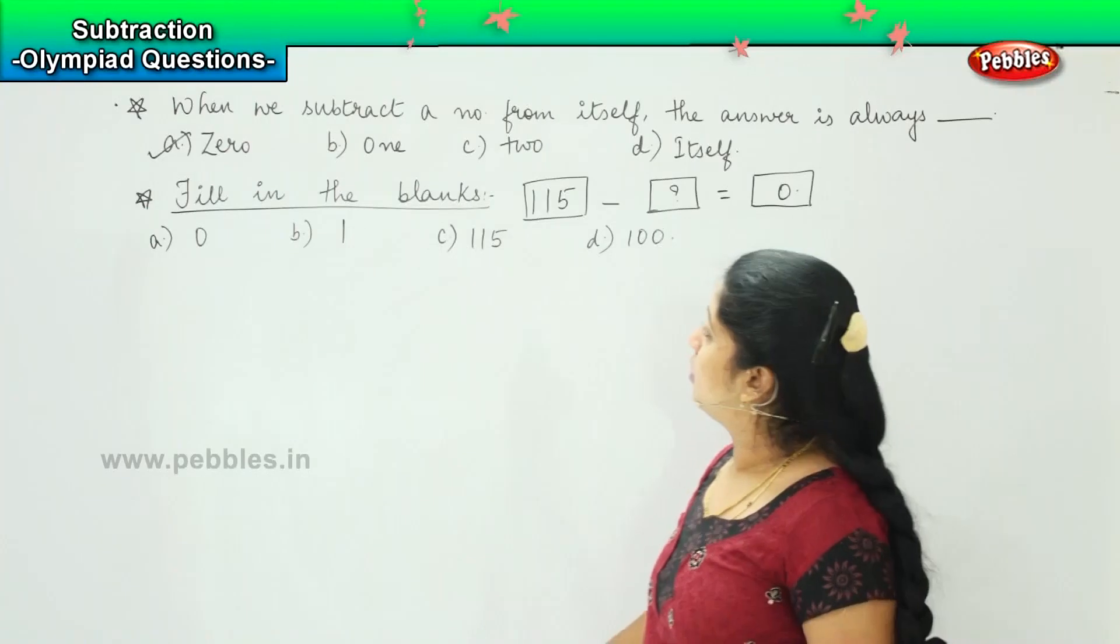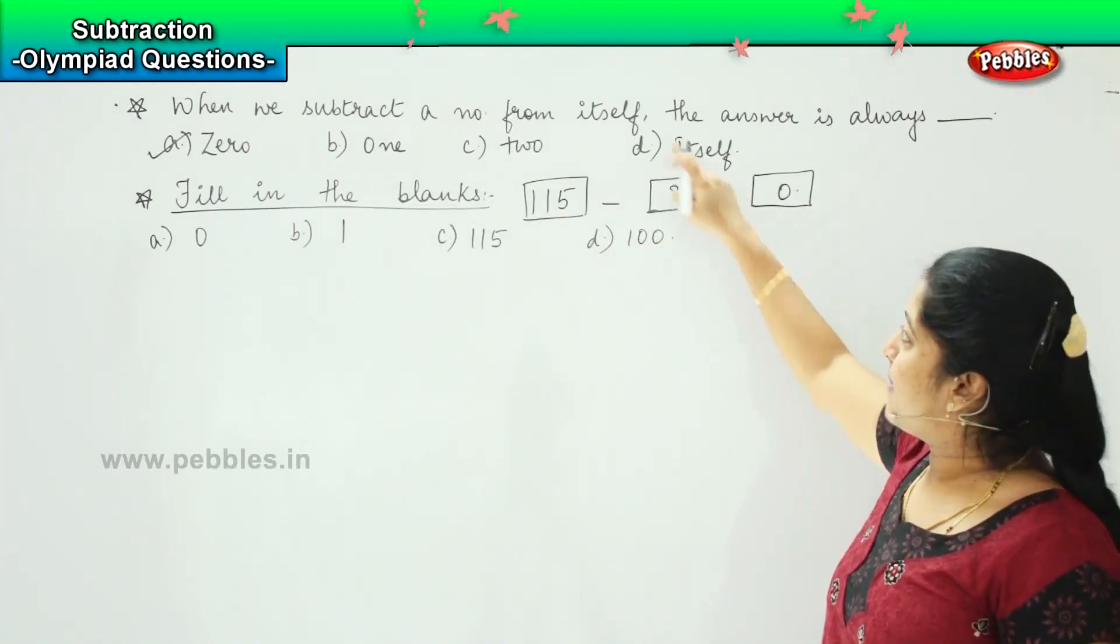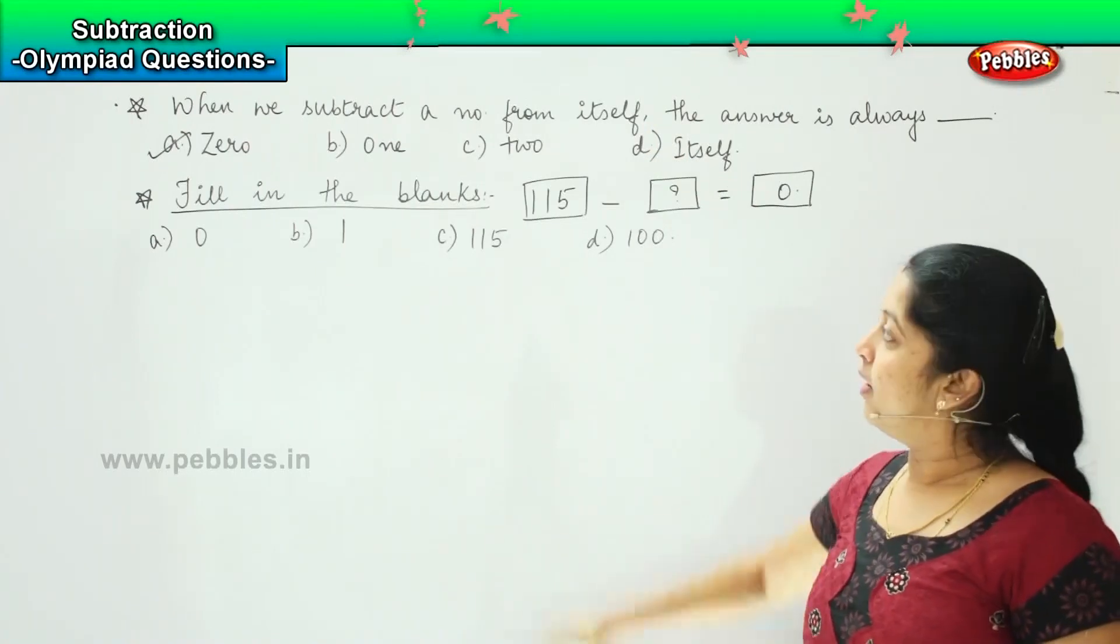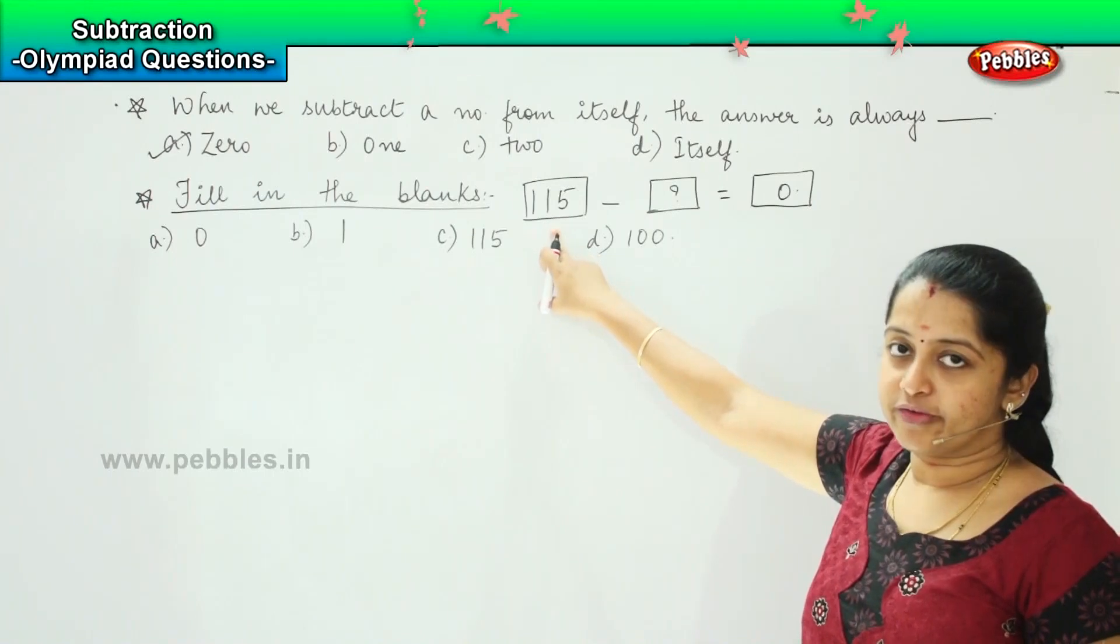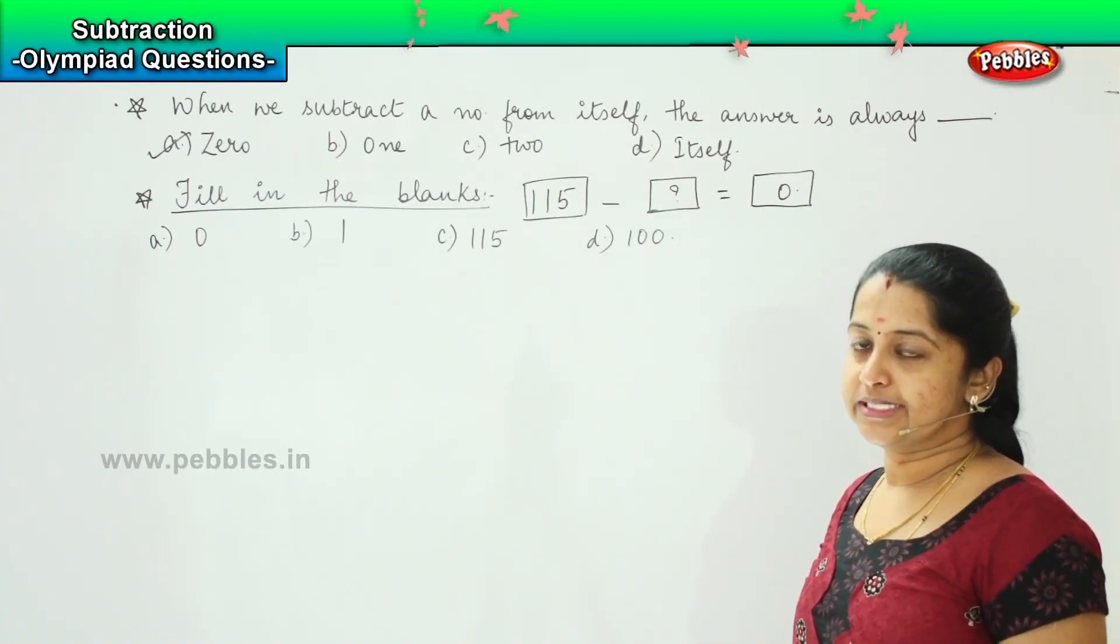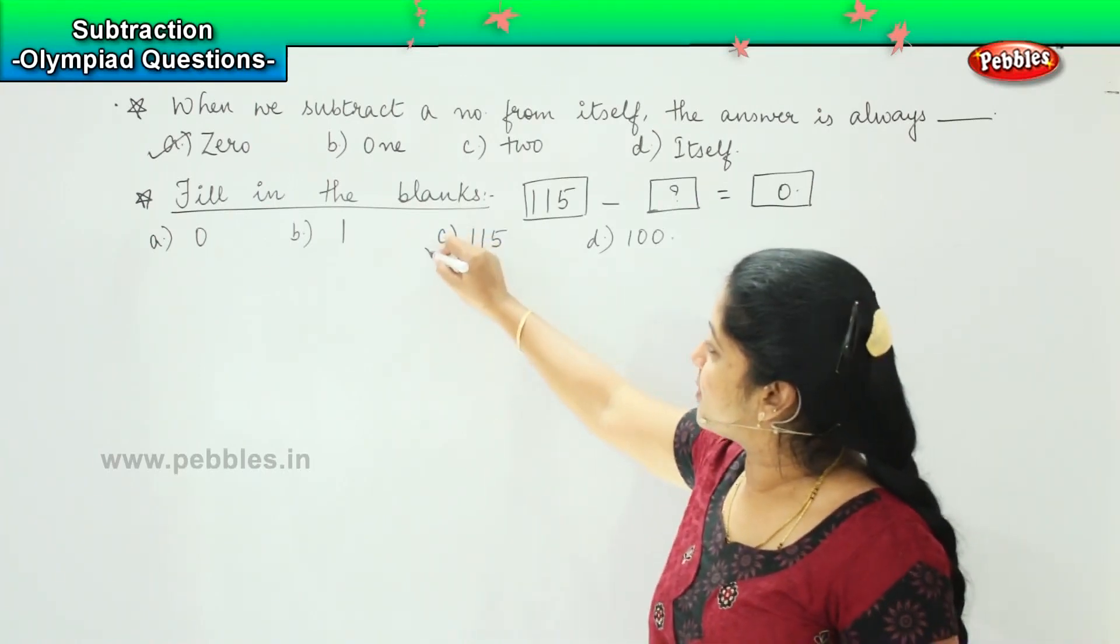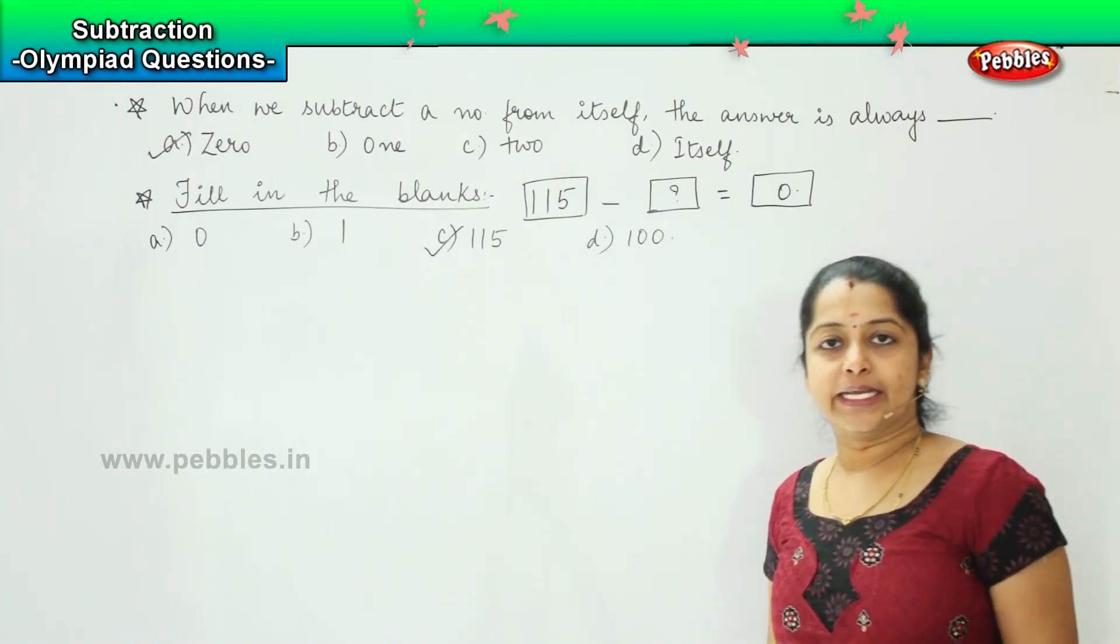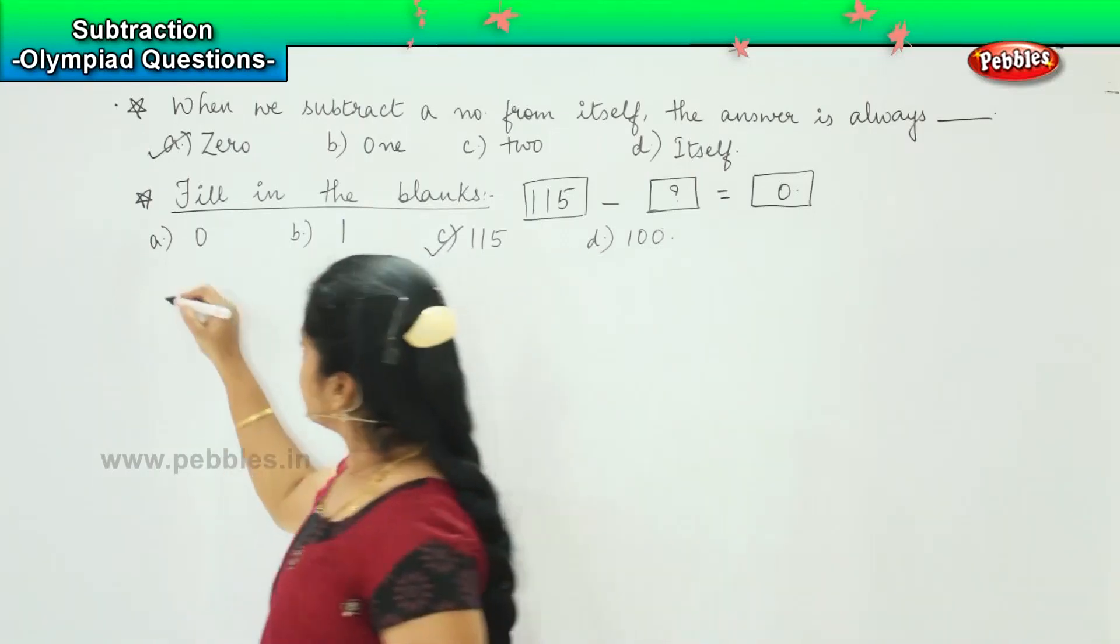Ok, so 115 minus something equals zero. This is same as the one we did earlier. When we subtract a number from itself, which means if I subtract 115 from 115, I will be getting an answer zero. So what is the right answer children? Very good, it is option c. Clear? Shall we move ahead? The questions are simple, right?